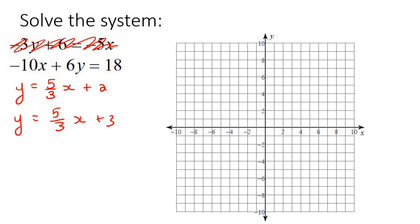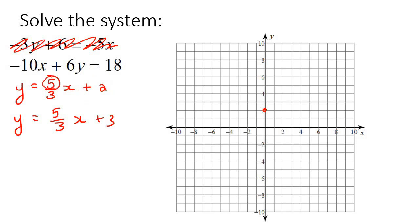It's interesting that these two lines have the same slope. So if we draw the first line, we go to positive 2 as the y-intercept. Then the slope is rise over run, so we go 5 up and then 3 to the right, and put a little dot over there. Then we connect them.